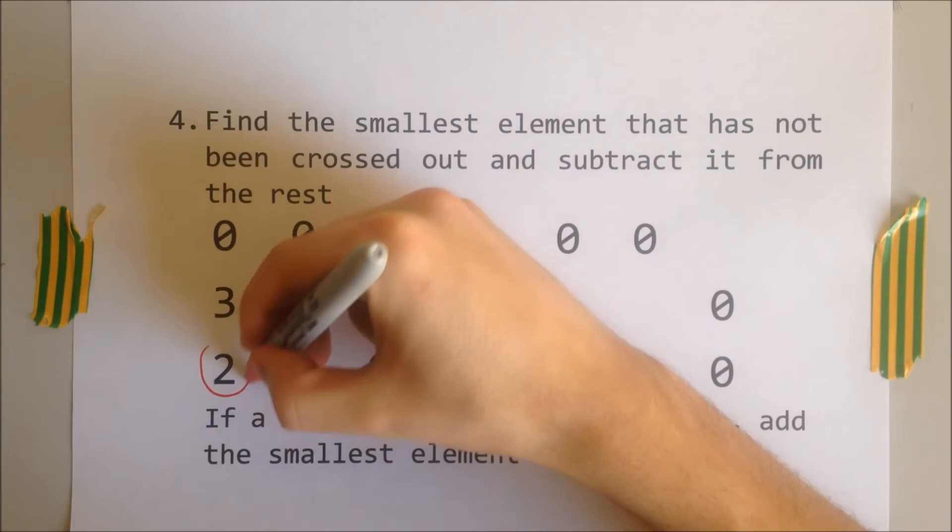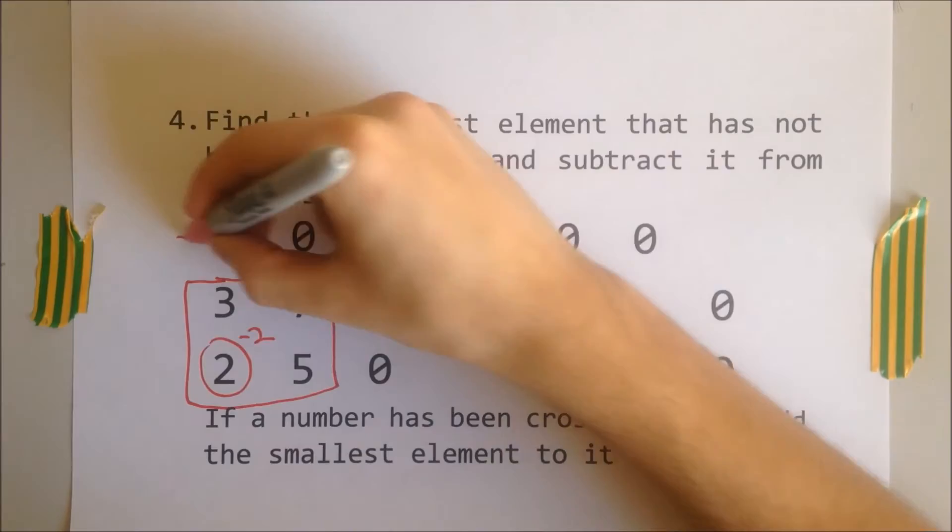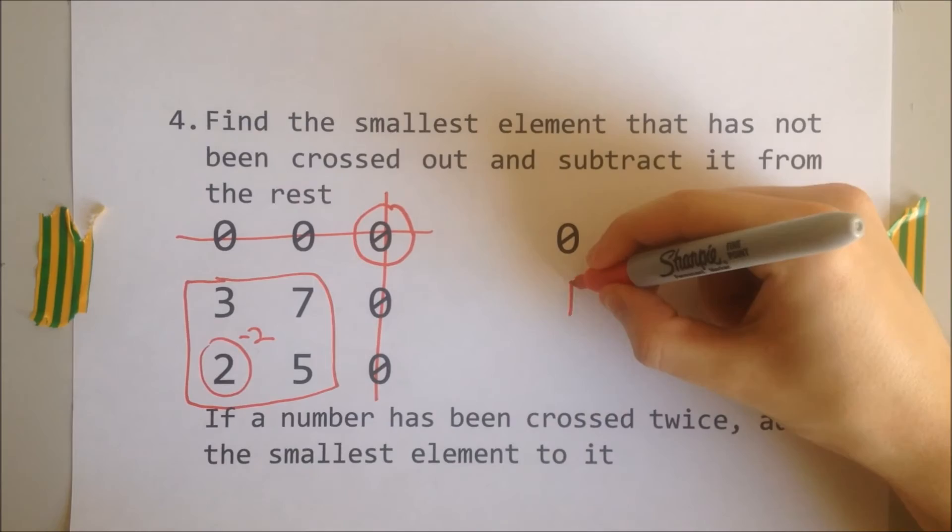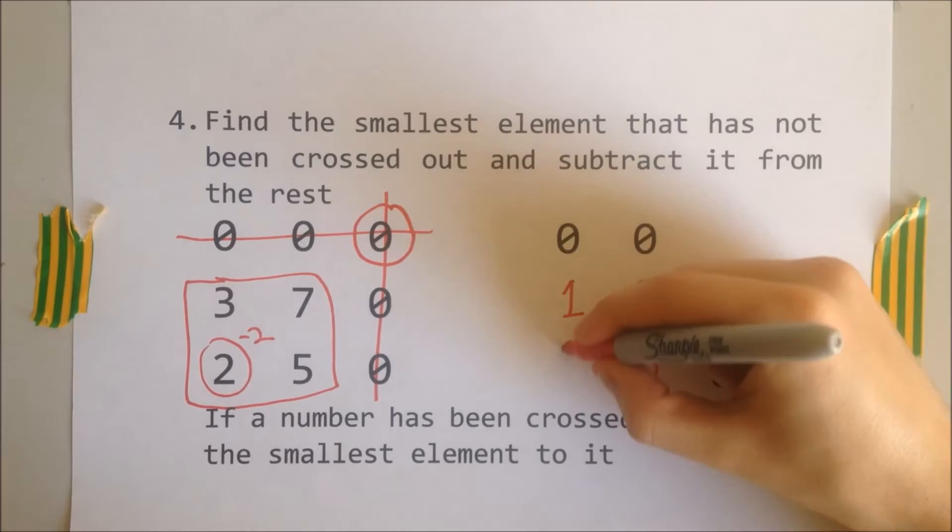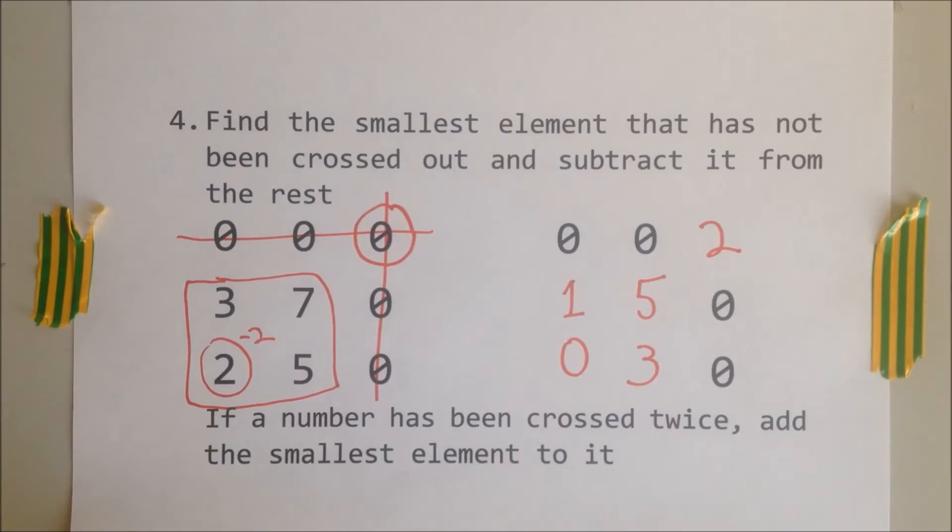Step four, find the smallest element that's not been crossed out and subtract it from the rest. And if an element has been crossed twice, add the smallest element to it. In this case, the smallest number is 2, so you subtract this from the numbers not crossed and add it to the top right zero as it was crossed twice. This is the updated matrix after reduction again.